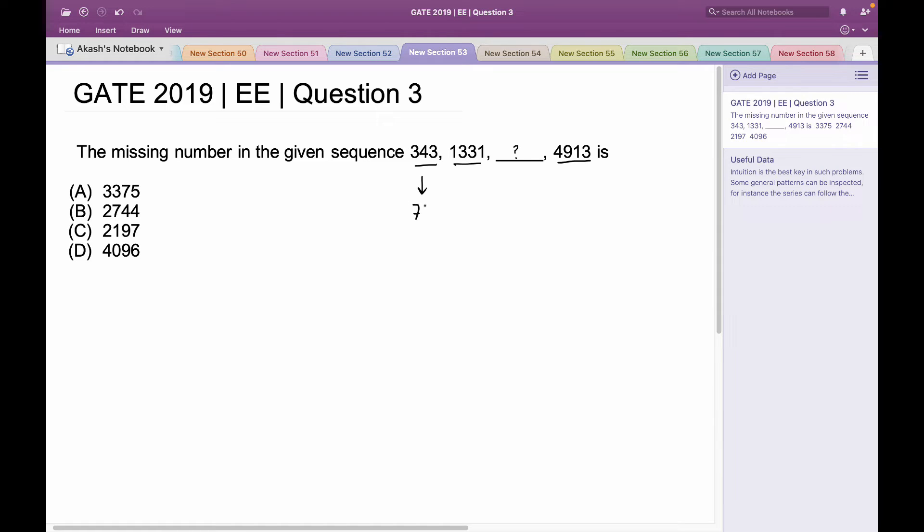Similarly, 1331 is the cube of 11, and 4913 is the cube of 17. Now I know for a fact that the missing number in the sequence has to be the cube of a certain entity.